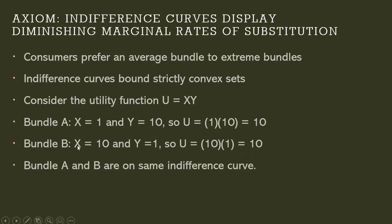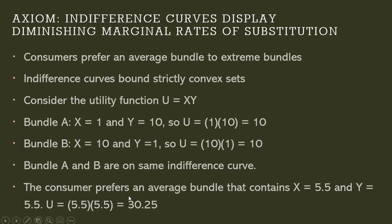So both Bundle A and Bundle B are in the same indifference curve. With convex preferences, the argument is that the consumer would prefer an average bundle to these extreme bundles. So the consumer prefers an average bundle that contains, say, 5.5 units of X and 5.5 units of Y. How did I get these 5.5? So for X, 1 plus 10 is 11, divide it by 2, we get 5.5.